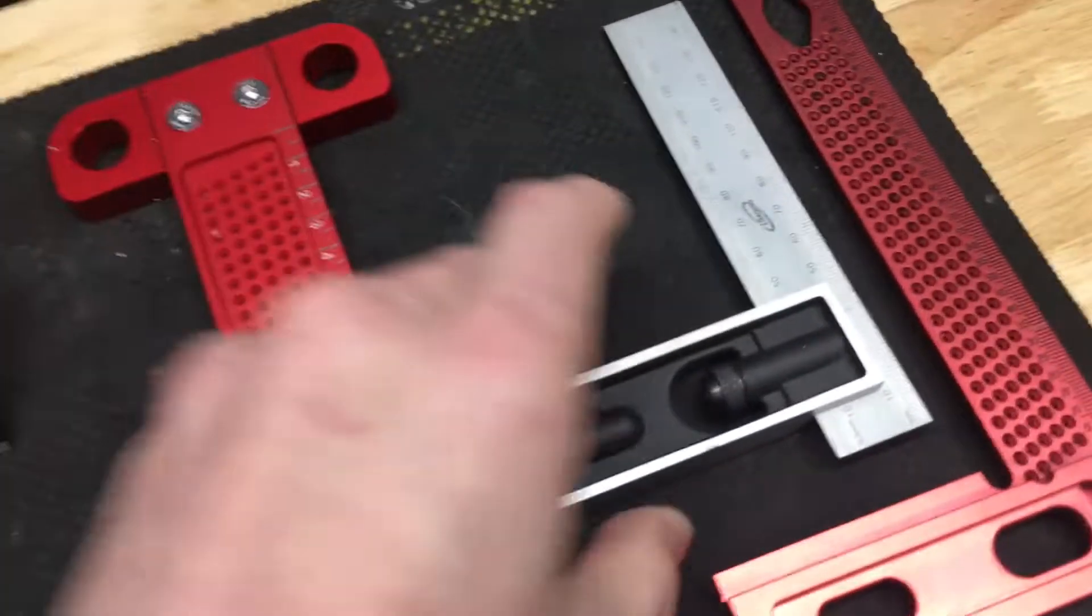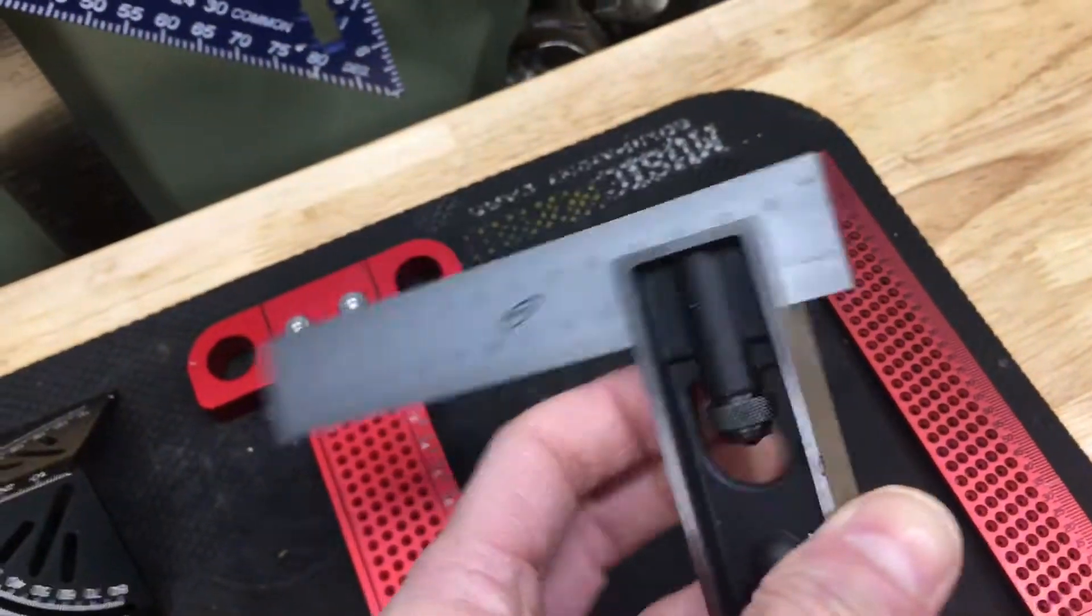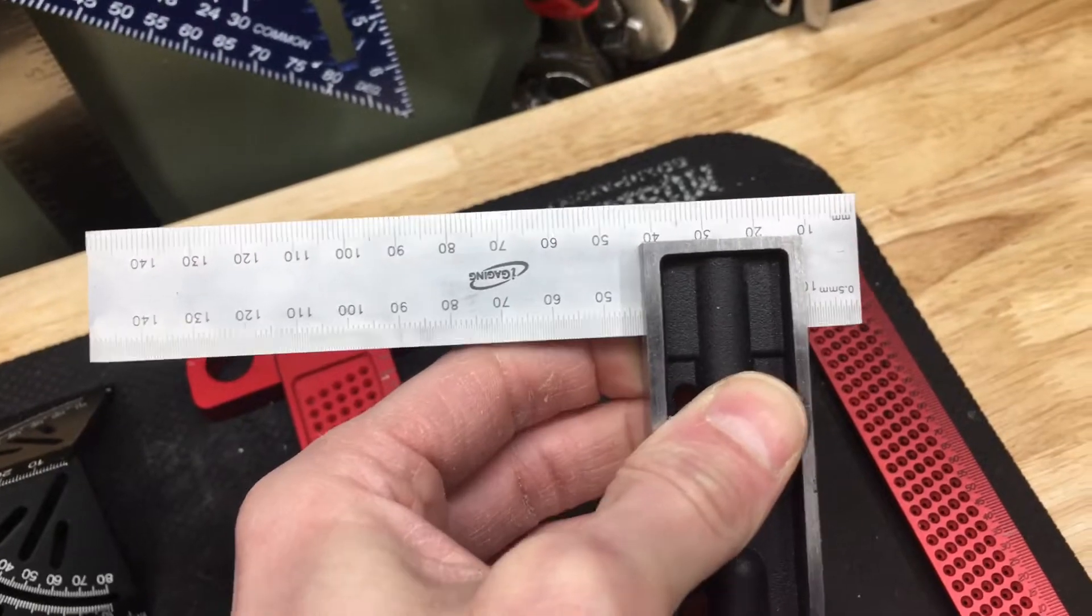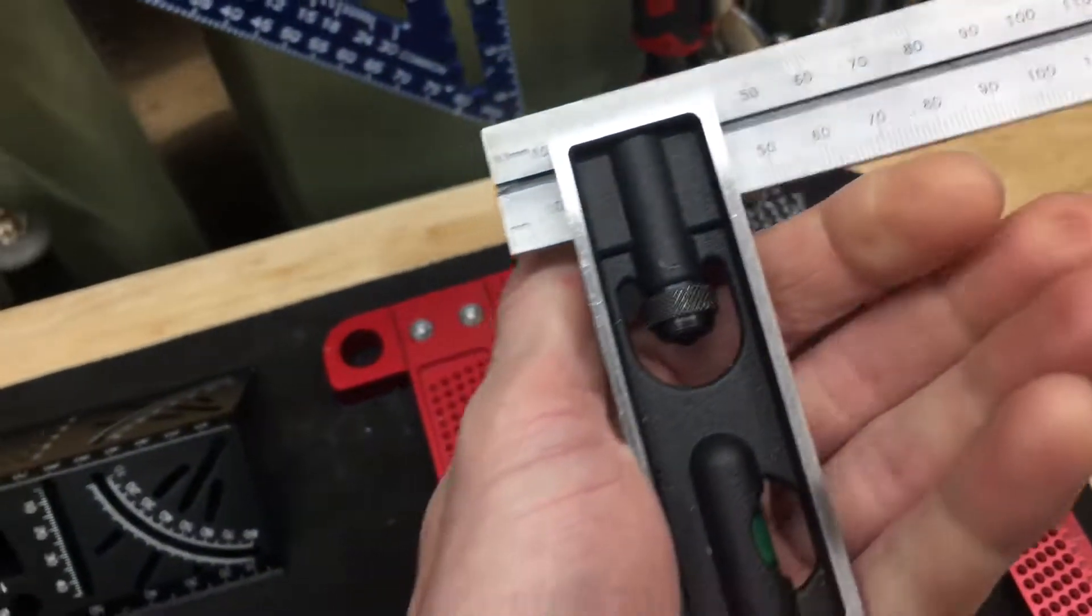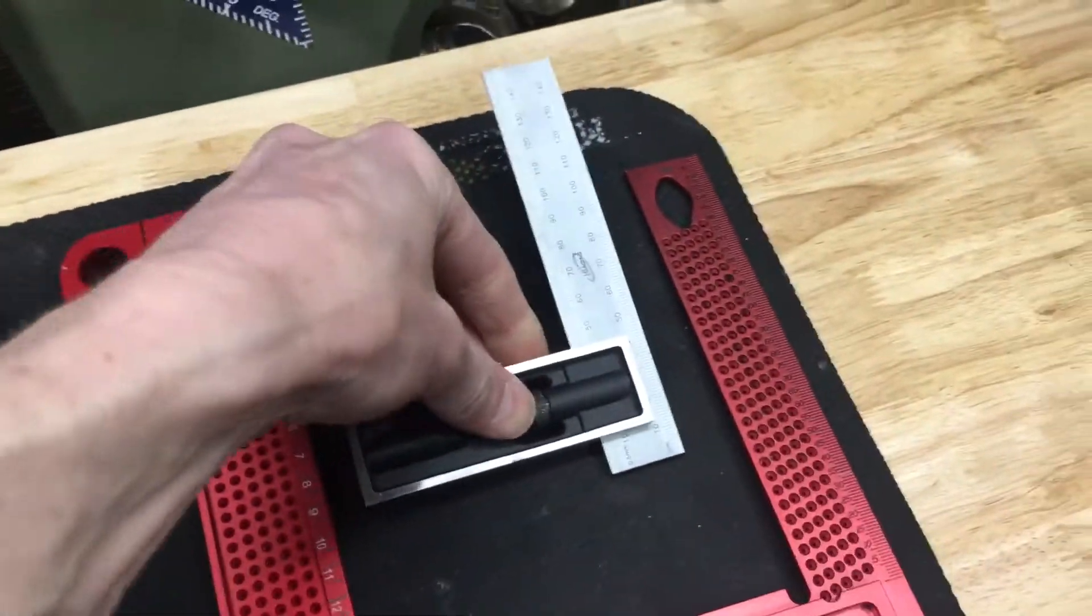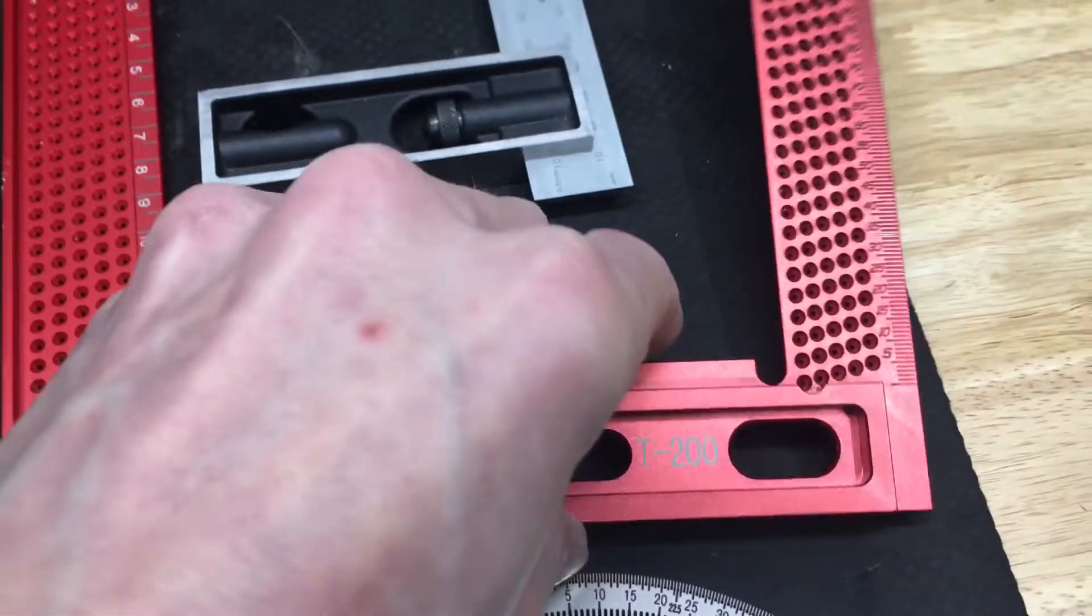but this thing right here is guaranteed square to like a thousandth of a millimeter or whatever. Super accurate double square, pretty cool. And then I got this